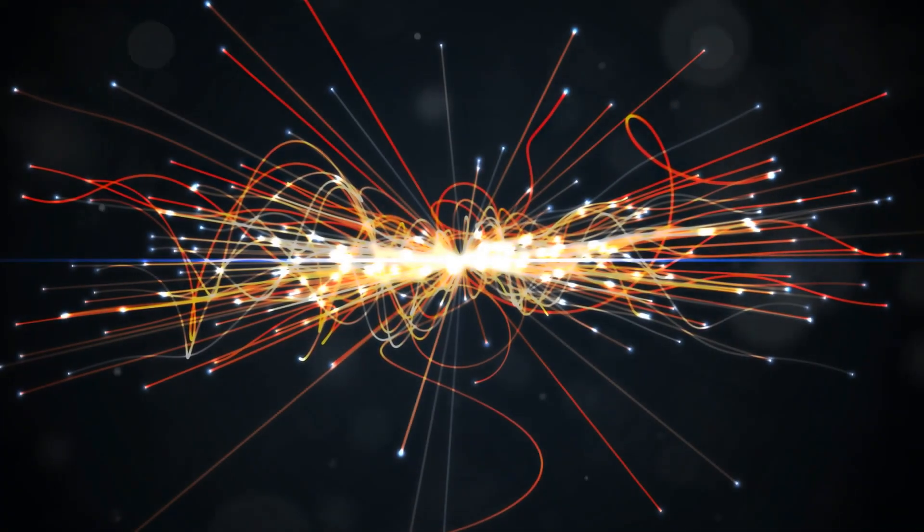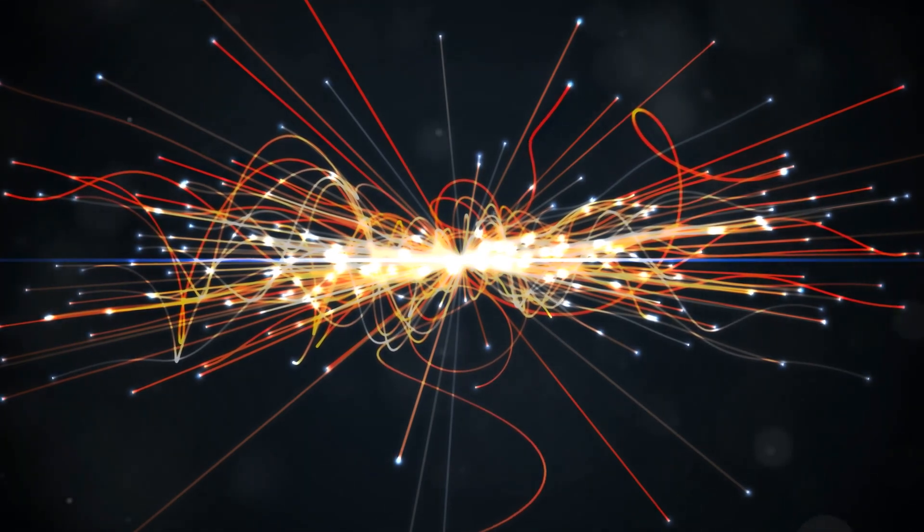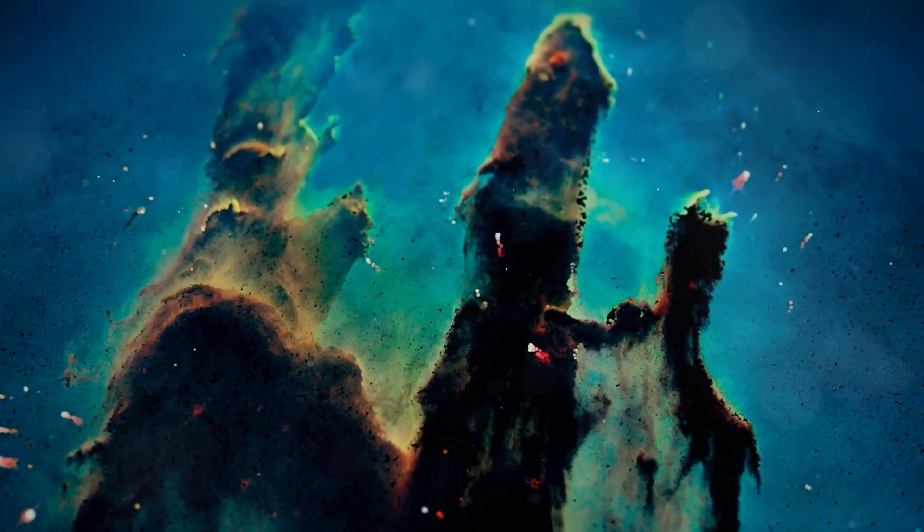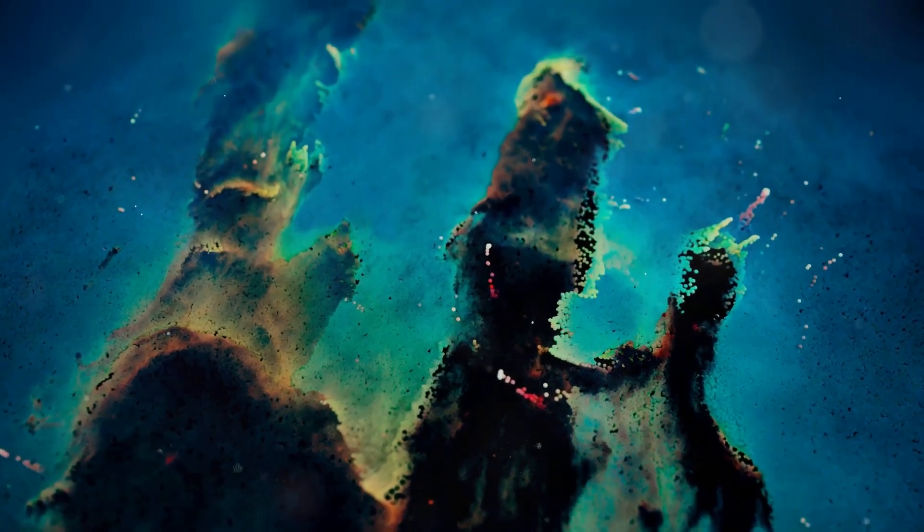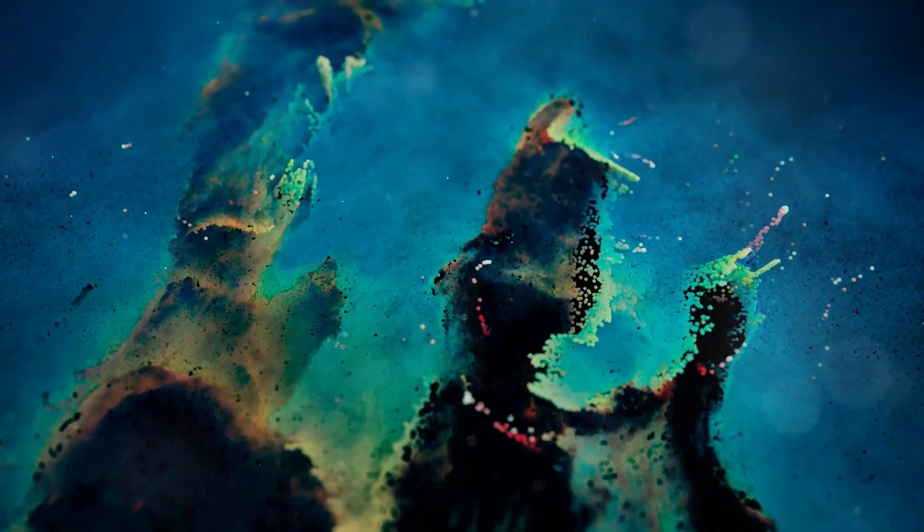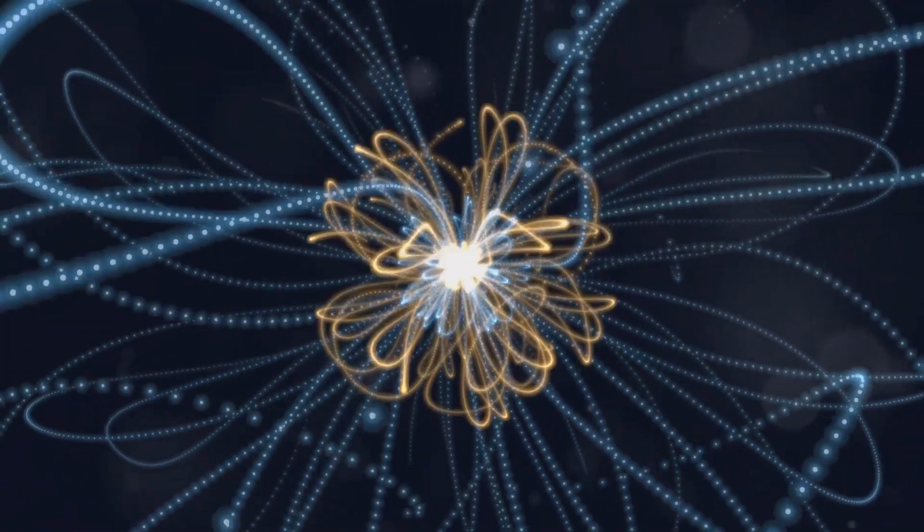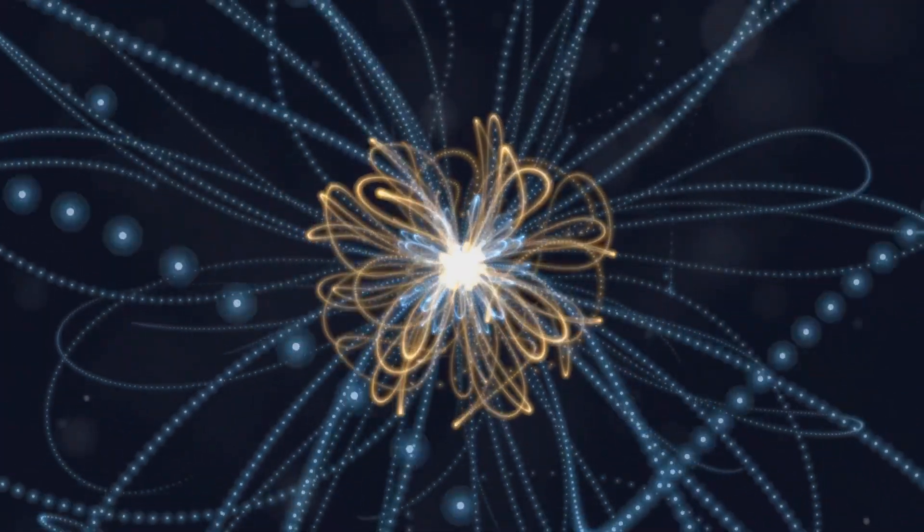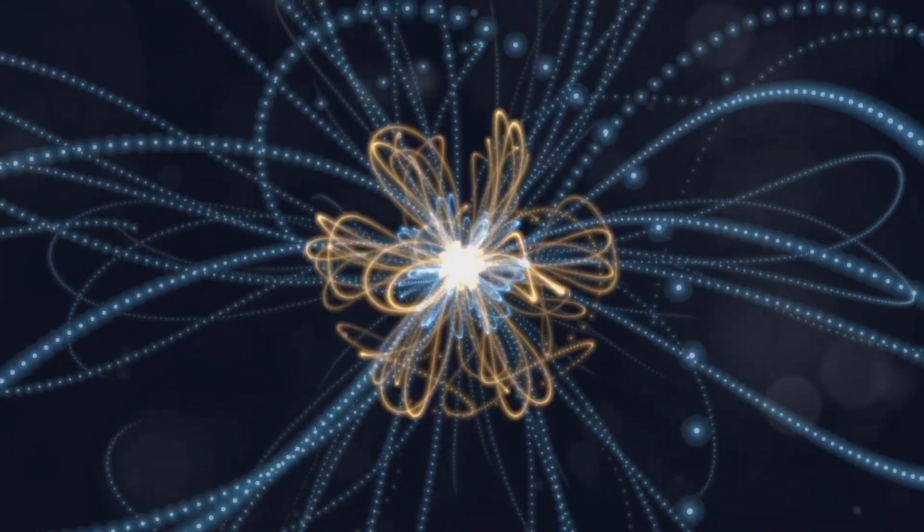One of CERN's most celebrated achievements was the discovery of the Higgs boson. This elusive particle, nicknamed the God particle, helps explain why other particles have mass. Imagine a vast, invisible field permeating the entire universe. This is the Higgs field. As particles move through this field, they interact with Higgs bosons, gaining mass in the process.